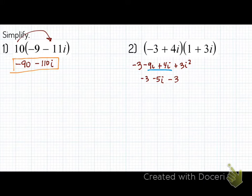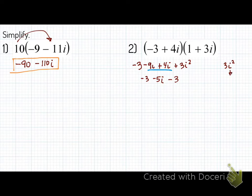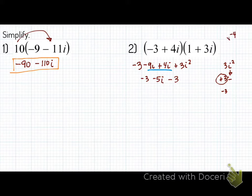Now we can start combining like terms. I can combine negative 9i plus 4i — that's going to be negative 5i. Then bring down the negative 3. And then we've got this i squared here. That i squared is like saying it's a negative sign, so what's negative times positive 3? Well, that's negative 3. Think of i squared as a negative sign — just like we originally thought of negative 4 under the square root, we could take the negative sign and make it i squared.